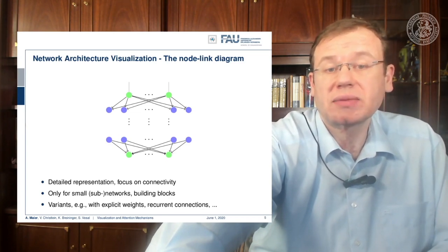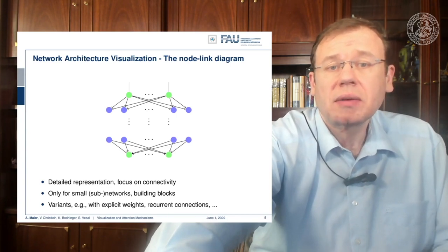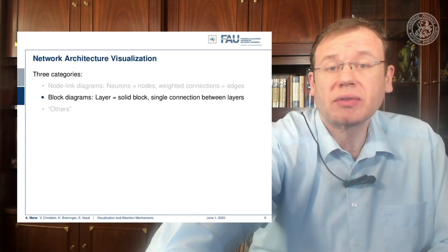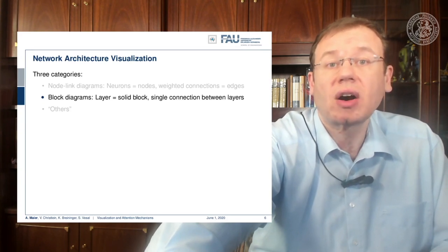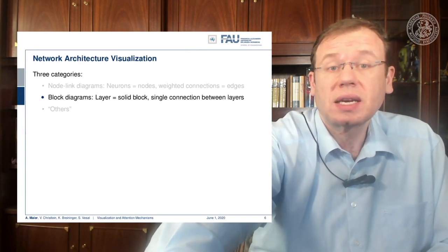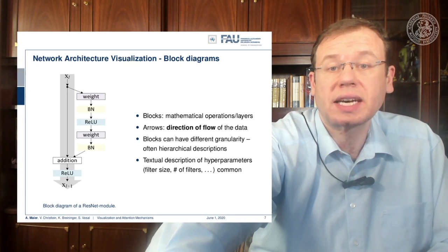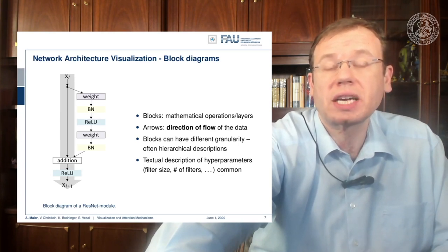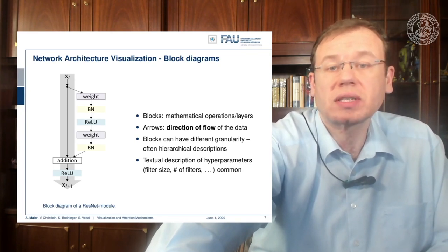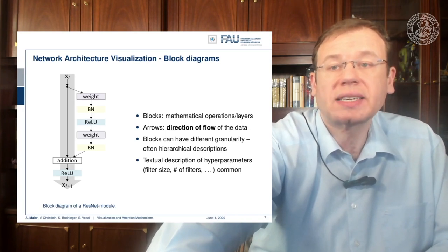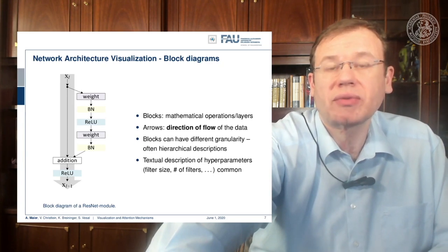For larger structures we use block diagrams, where solid blocks share single connections between layers even though all neurons are actually connected. The block represents a mathematical operation or layer, arrows show the flow of data, and blocks can have different granularity using hierarchical descriptions. You can combine block diagrams with node-link diagrams to clarify what each block does. Textual descriptions are needed for hyperparameters such as filter sizes and number of filters, typically in the caption or as small annotations.